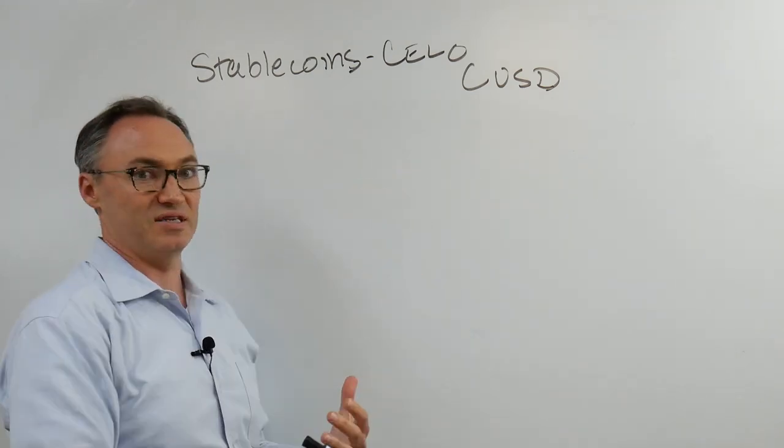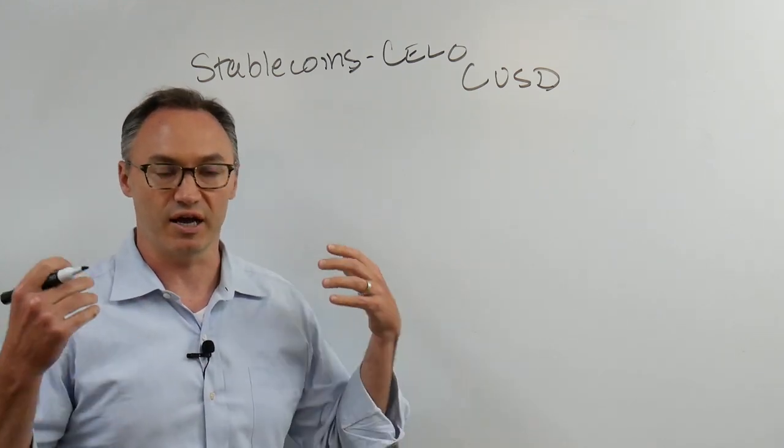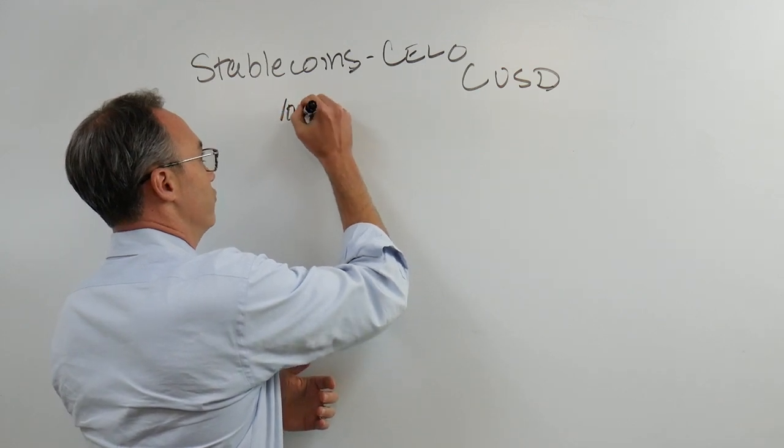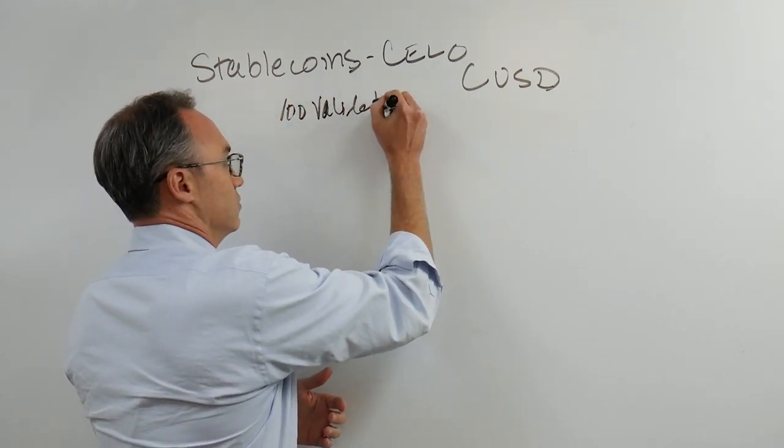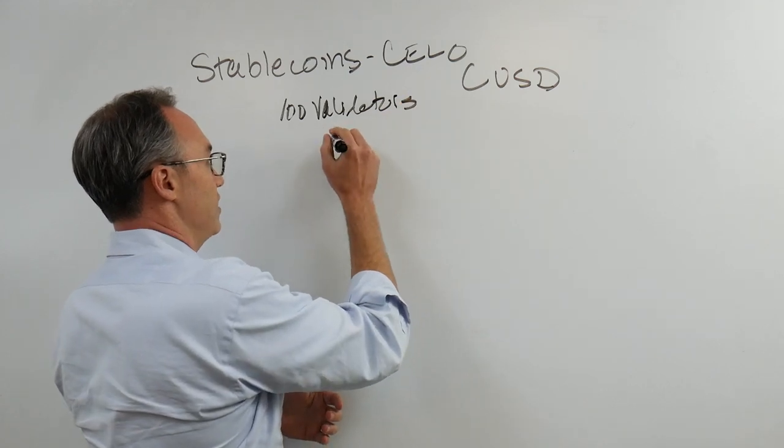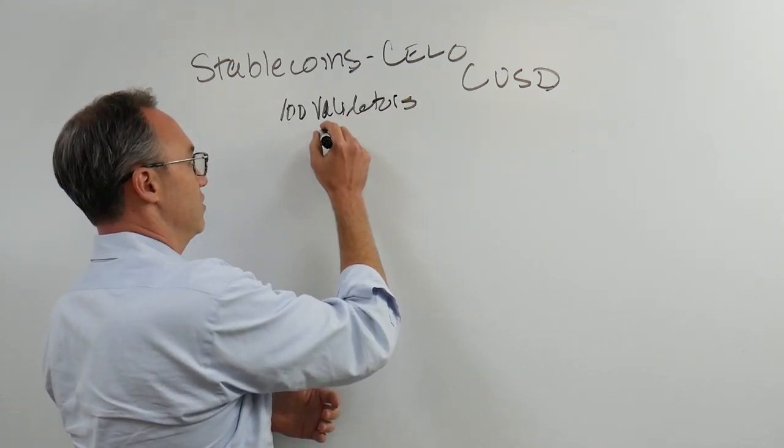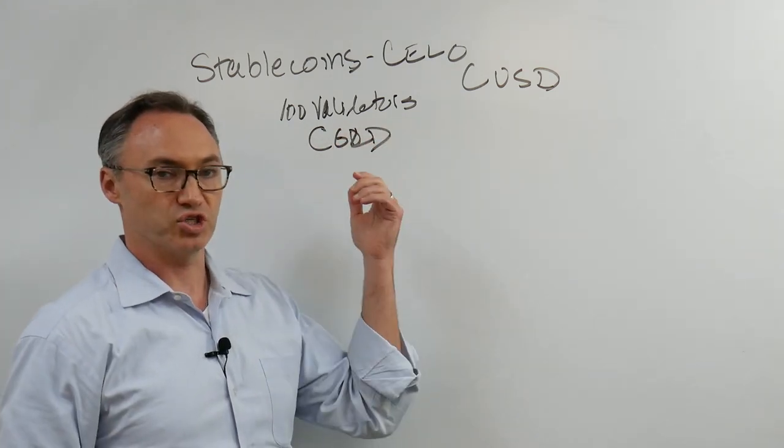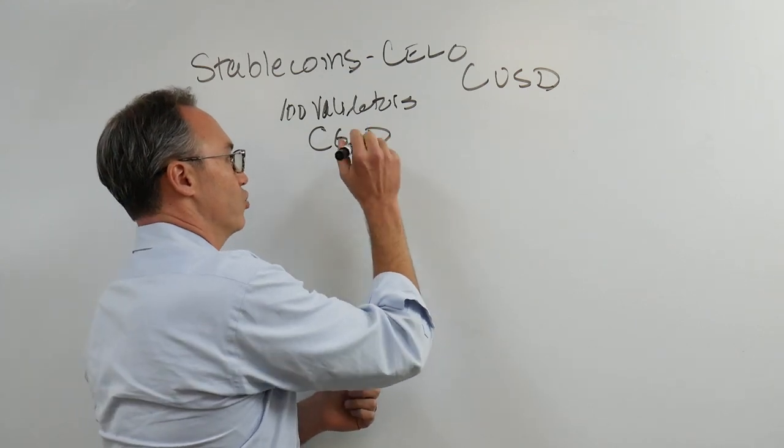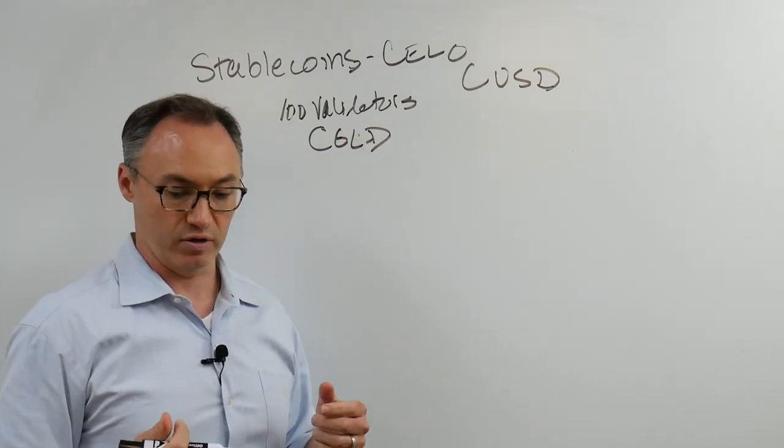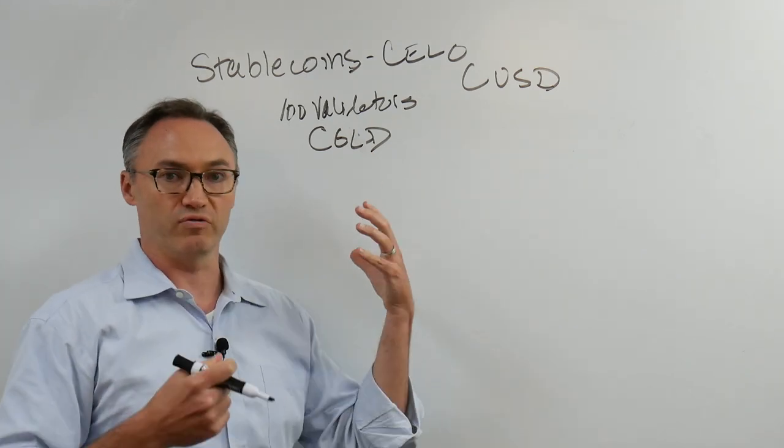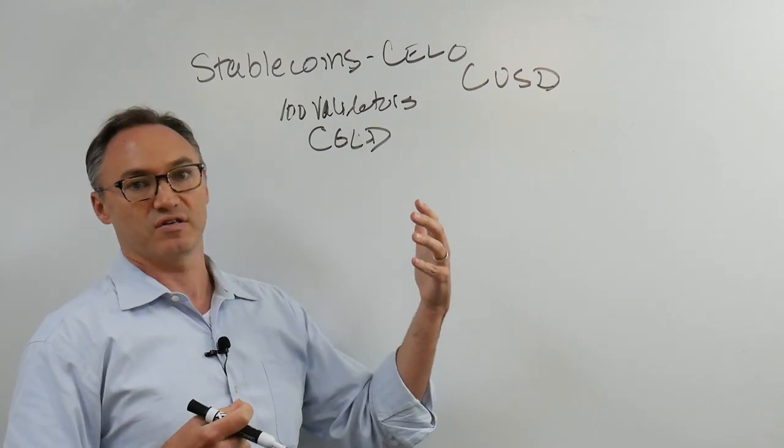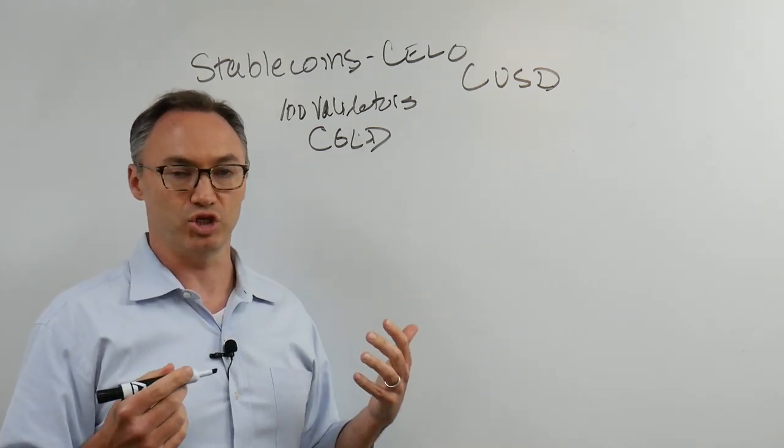Celo is not a fully public blockchain. Not everyone can get a node and validate. They have validators - a hundred validators - and those validators get paid. They've been issued C-gold, CGLD. So CGLD is the cryptocurrency that's going to fluctuate in value. The point is these validators are wanting to validate this network. They have to have some sort of incentive, and the incentive is the value of the CGLD.